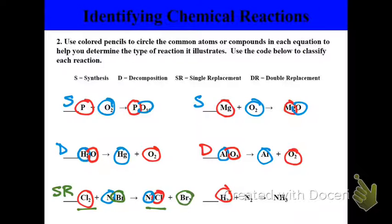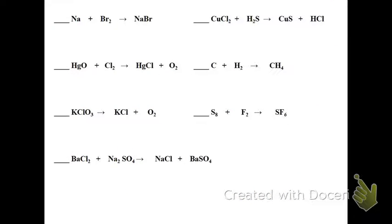Hydrogen plus nitrogen, yielding NH3, or ammonia. So this is also a synthesis reaction. If we continue on, Na plus Br is showing two single elements being combined into one. So we have synthesis. CuCl, or copper chloride, plus H2S, or hydrogen sulfide, yielding CuS and HCl. So you can see the copper becomes joined with the sulfur, and the hydrogen and the chloride become joined, so this is a double replacement.